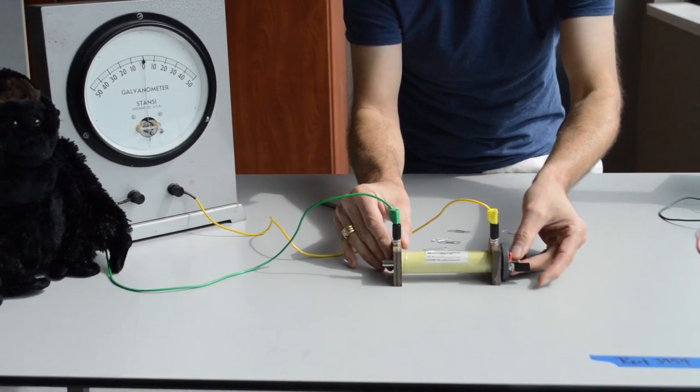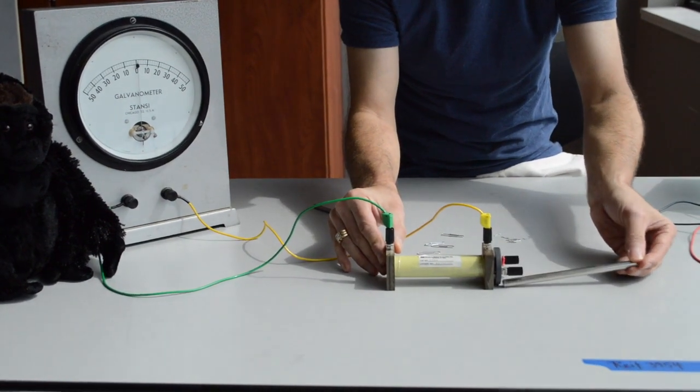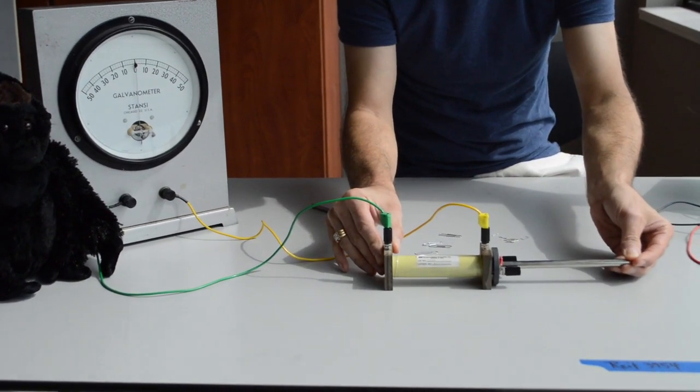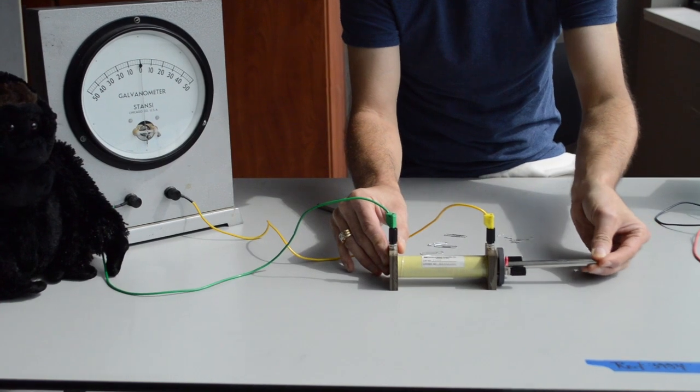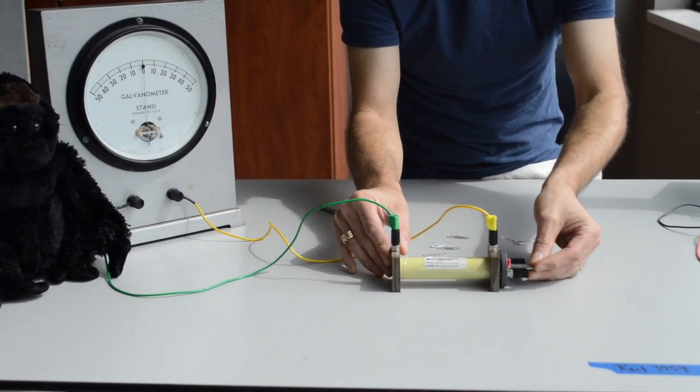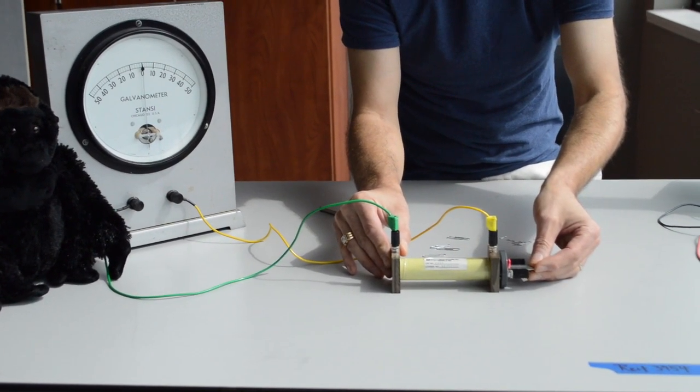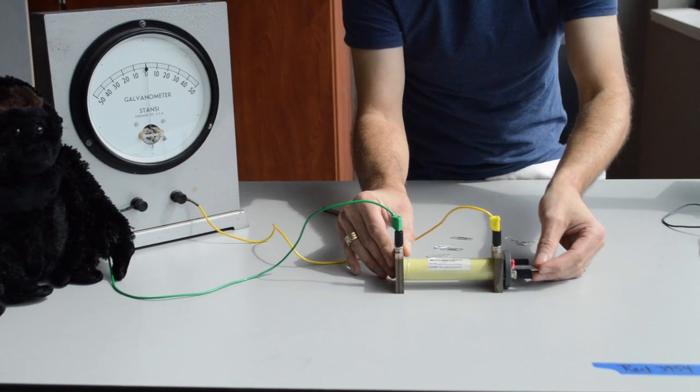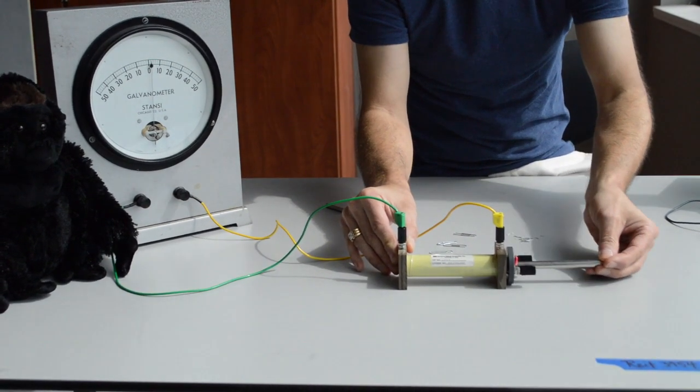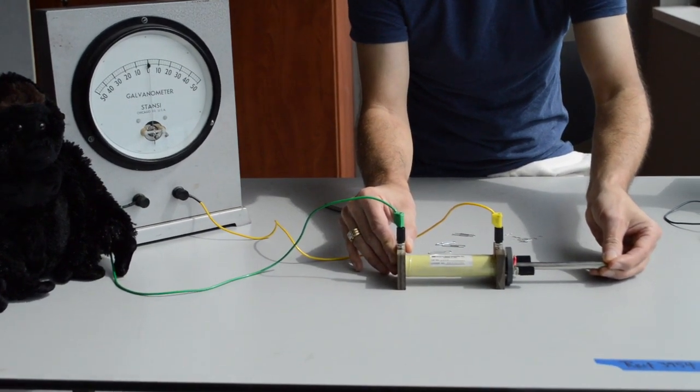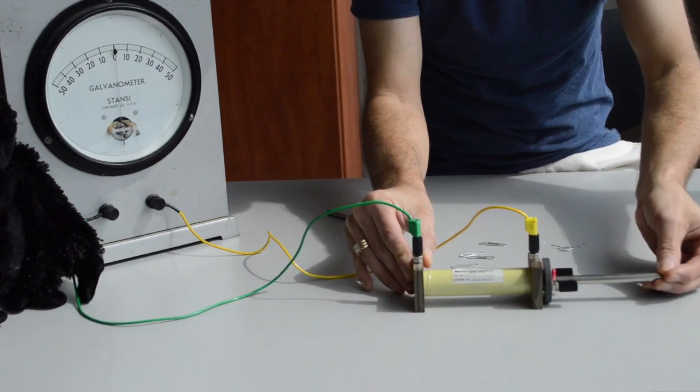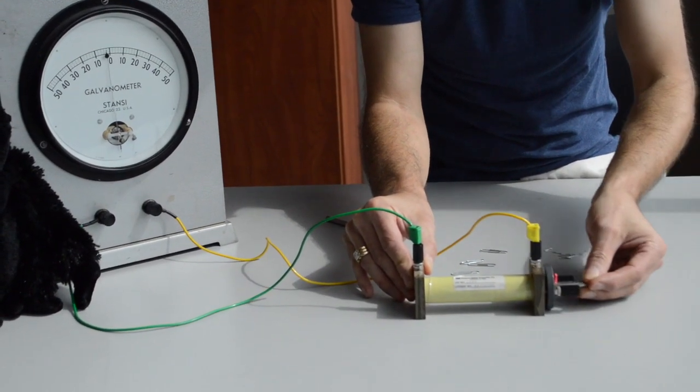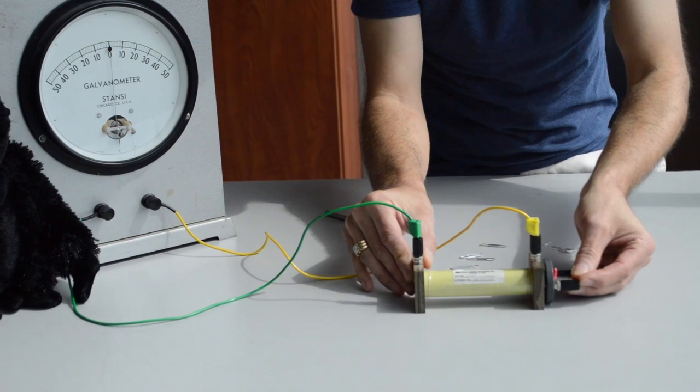There's a tiny movement of the needle. If I put the core in to your left, then the needle moves to your left. If I pull it out to your right, the needle moves to your right. If I move the core faster, the needle moves more.